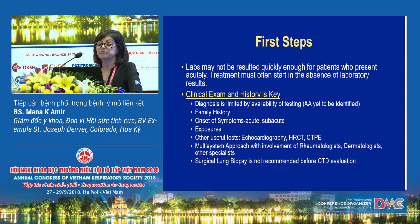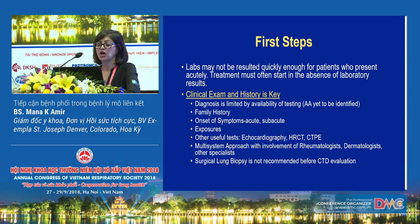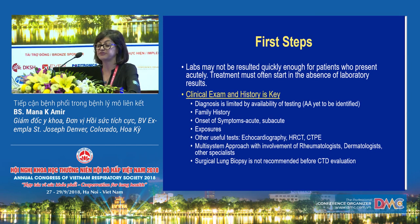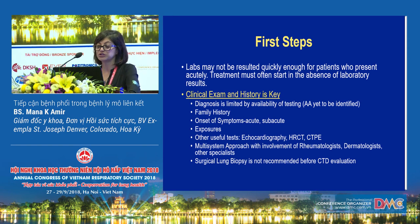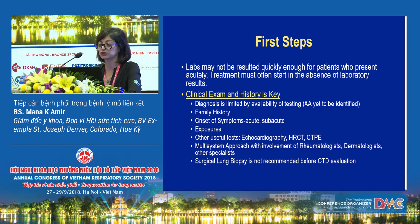Sometimes the turnaround for labs is very slow and we have to make clinical decisions in the absence of laboratory data. History becomes very relevant. It's important to focus on family history, as many autoimmune conditions are familial. Pay attention to whether the presentation is acute or subacute, and whether the patient has had any exposures. A multi-system approach is very important — rheumatologists, dermatologists, and pulmonologists can work closely to make these diagnoses. I would not recommend surgical lung biopsy before a connective tissue disease evaluation.